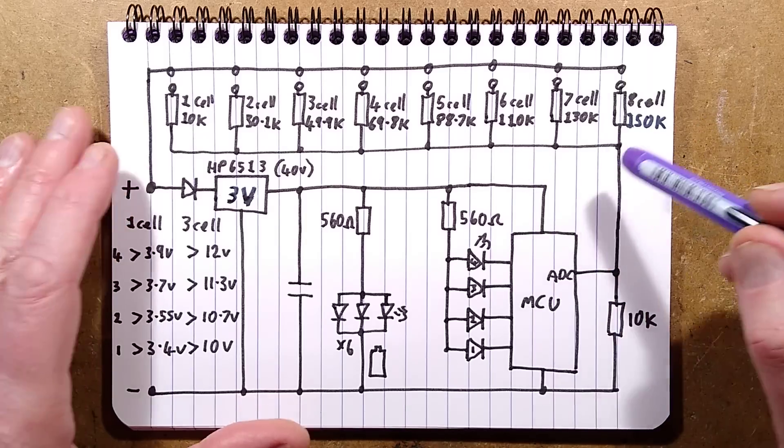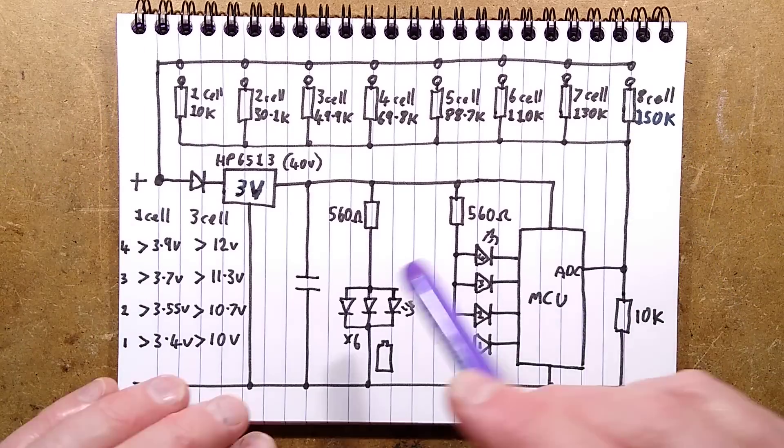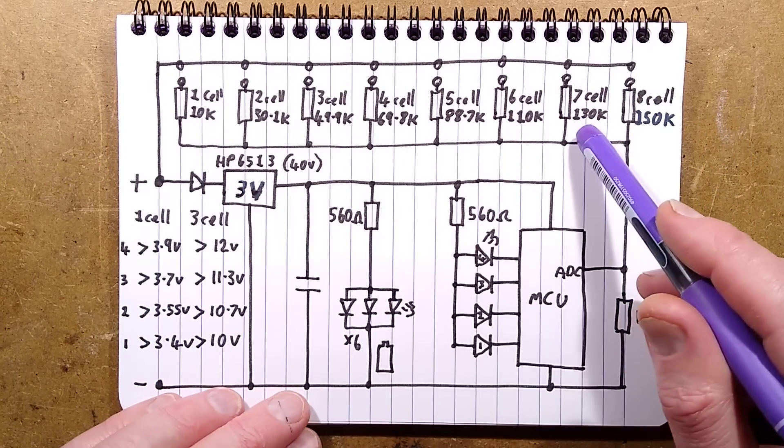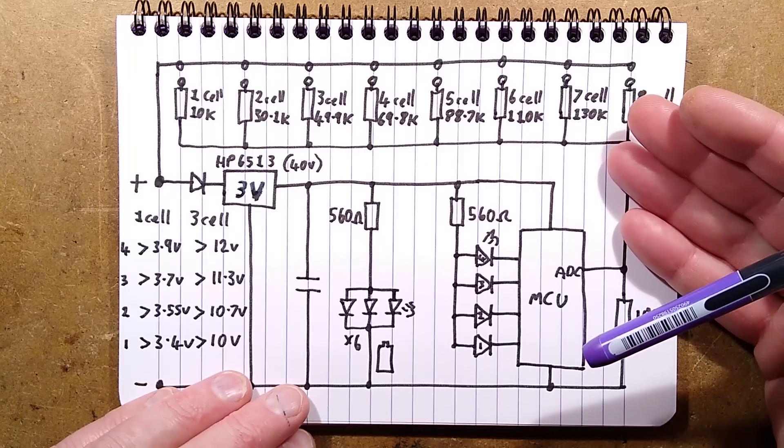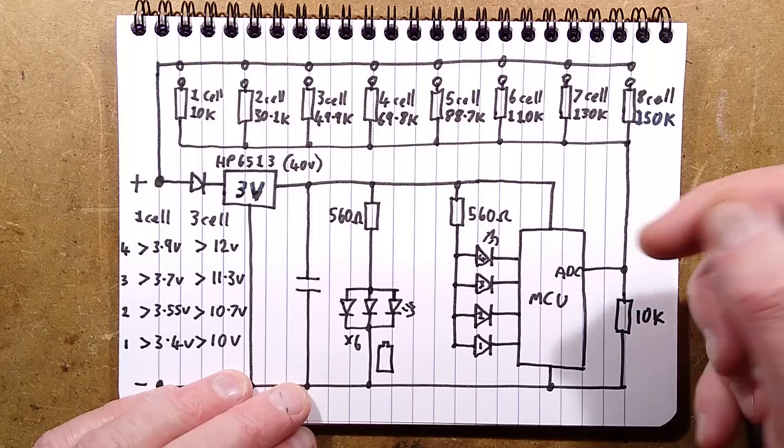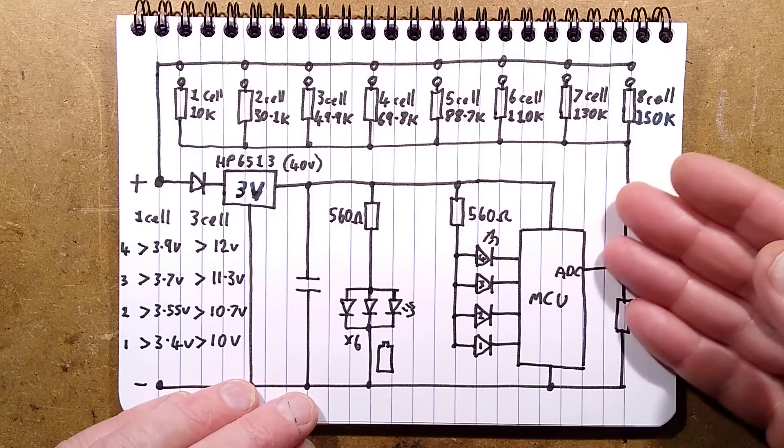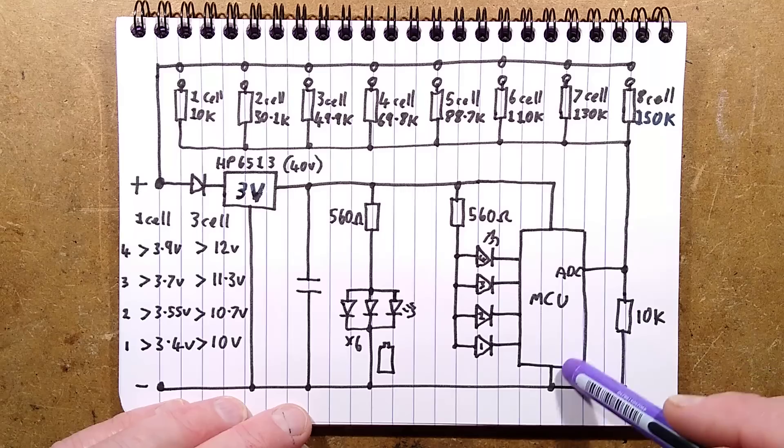So the fact this has these cell thresholds optimized for lithium means unlike the other one I featured recently with the op amps, you can't just change resistors and fine tune it to a different battery technology. That has to be done in the microcontroller.